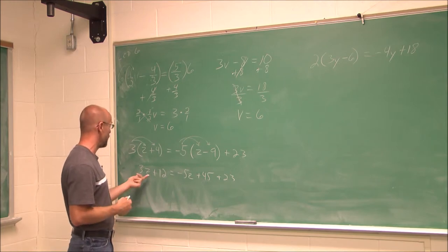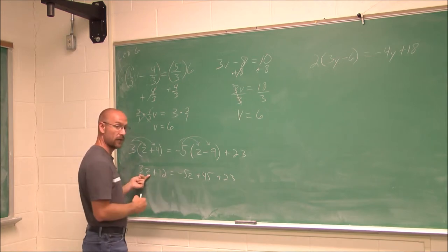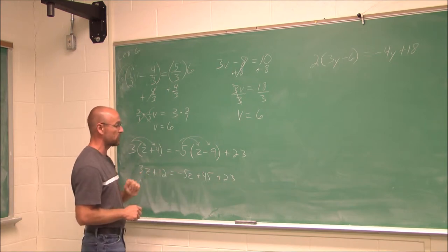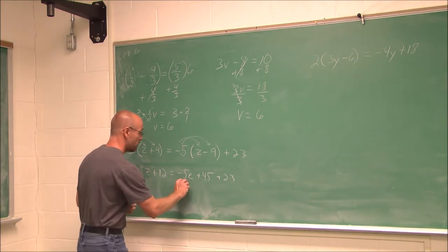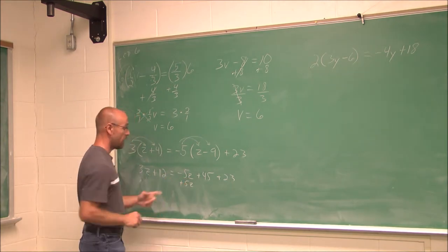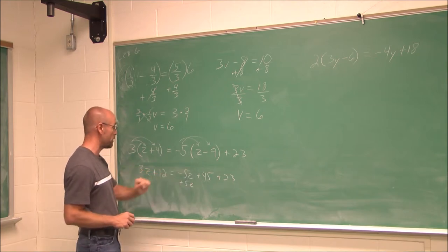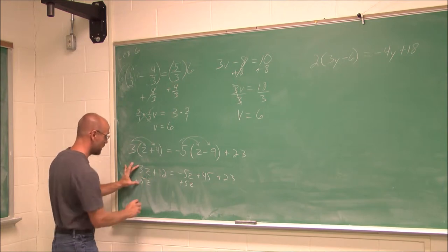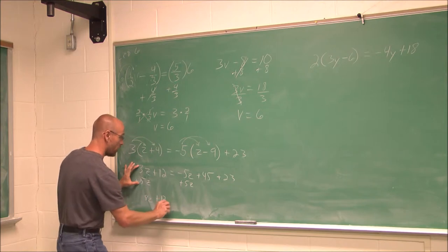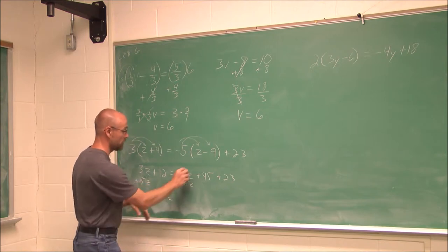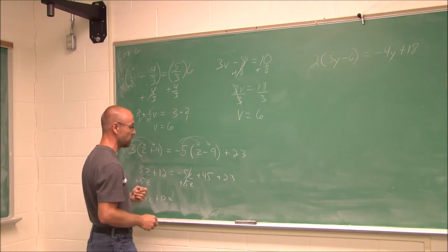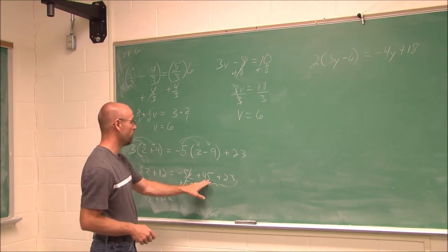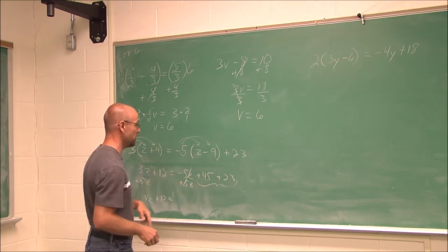Before doing anything else with the numbers, I'm going to get my z's together. I assess: what is the larger value — positive 3z or negative 5z? A positive is a larger value than the negative, so the negative is the smaller one — that's the one I'll move. Since it's negative, I can add it, and it'll be gone from this side. Property of equality: what I do to one side, I do to the other. I add 5z, giving me 8z plus 12. The z's are gone from the right side, and 45 and 23 combine to 68.